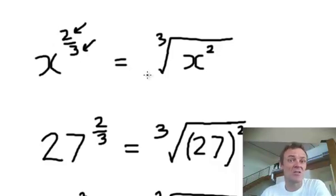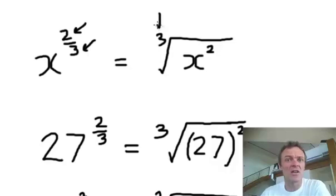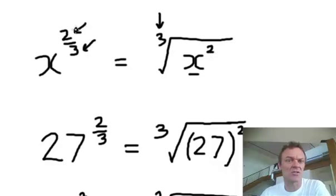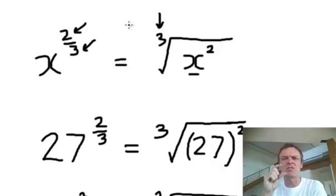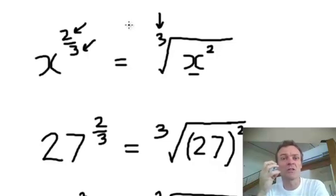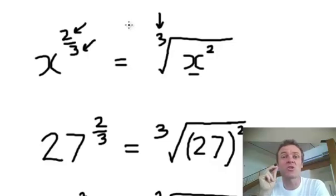So this is what it means. If it's a cube root of x — because that's the denominator — then that goes there. There's the cube root of x, but the x is being squared as well — that's the numerator. So just be careful, don't flip this upside down. The denominator is the root, so the cube root for this one; the top, the numerator, the 2, is what I'm squaring.